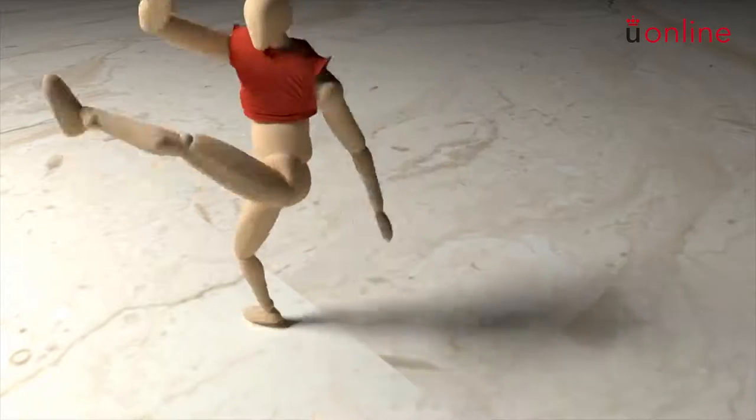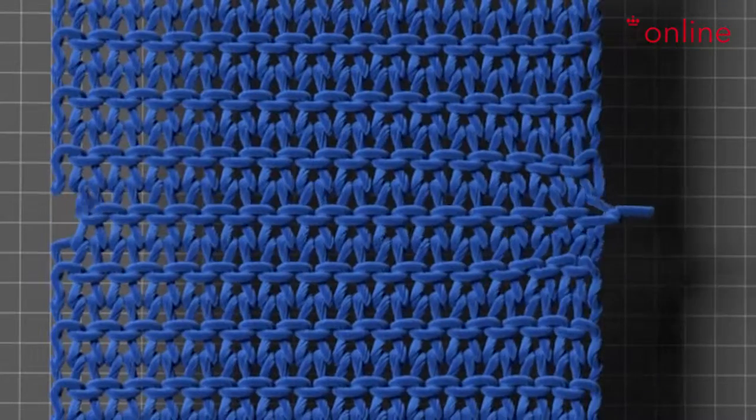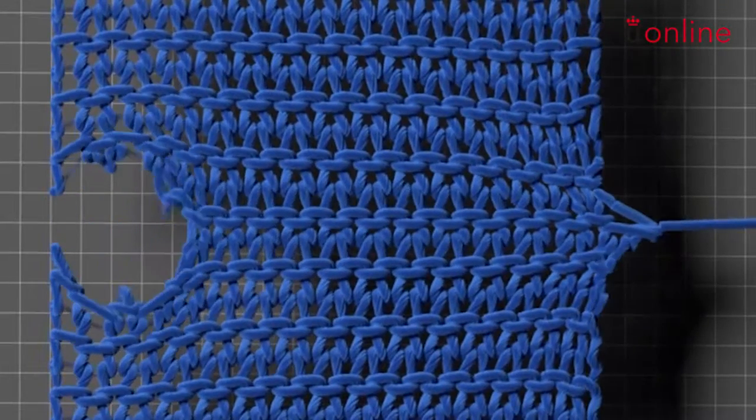And because we represent everything at the yarn level, we can also model snags or other small scale phenomena.